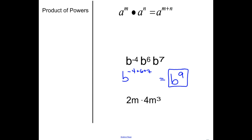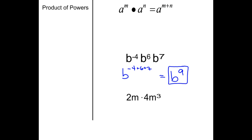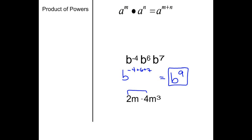Now let's look at multiplying 2m times 4m cubed. First we multiply the numbers: 4 times 2 equals 8. Then we take m to the 1st — because there's an implied exponent of 1 that we just don't write — so it becomes m to the 1 plus 3, which is m to the 4th. So the answer is 8m to the 4th. That is your product of powers.